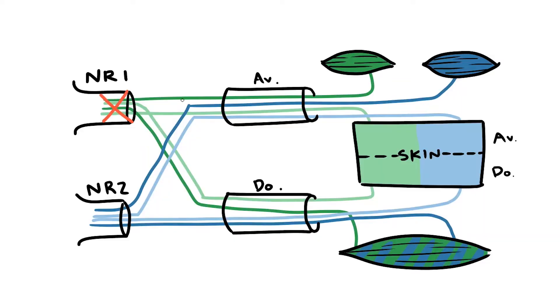Clinically these differences can be a useful diagnostic tool. If a patient damages a nerve root they may experience muscle weakness across a number of different compartments. If a peripheral nerve is damaged then a patient can suffer a complete loss of function within a compartment, but the symptoms are often limited to just that compartment.